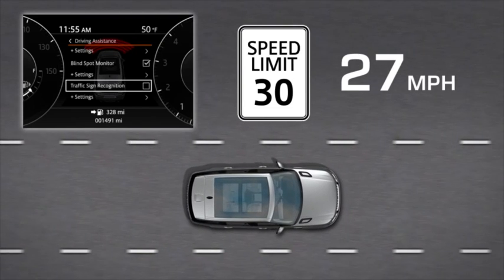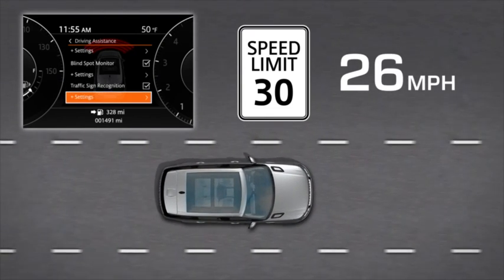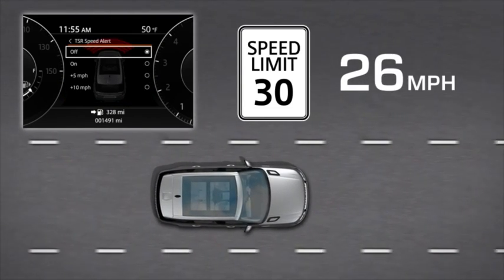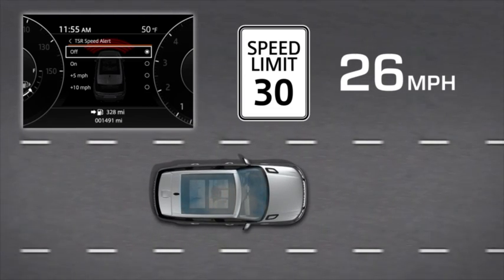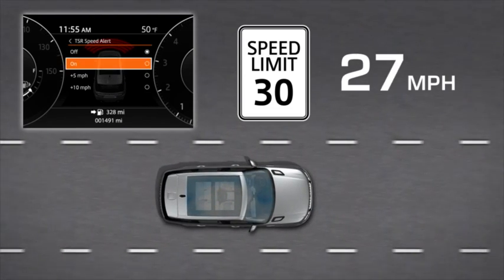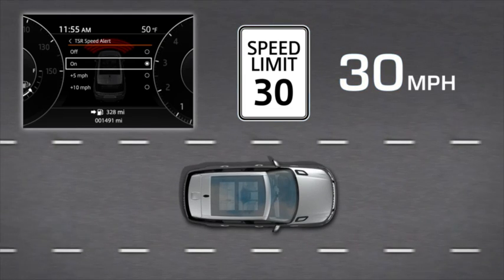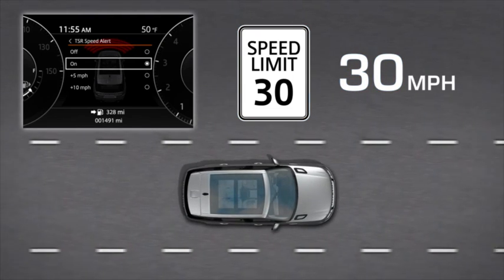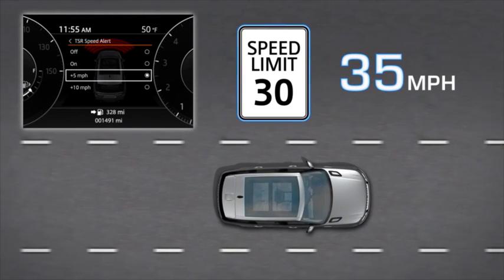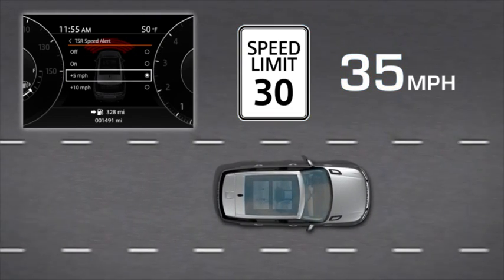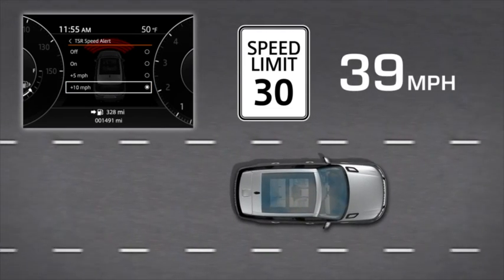Speed alert settings can be adjusted in the vehicle's setup menu on the instrument panel to display at three different settings: when the vehicle's speed equals the detected speed limit, when the vehicle's speed is five miles per hour above the detected speed limit, or when the vehicle's speed is 10 miles per hour above the detected speed limit.